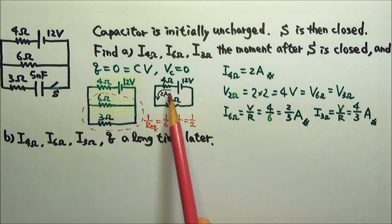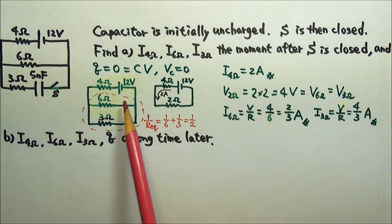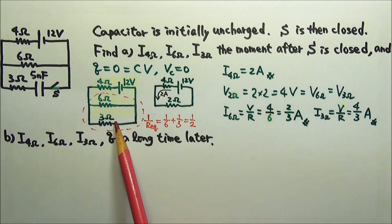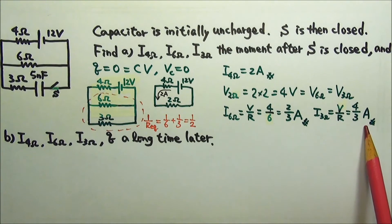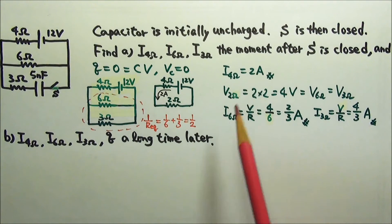And we can check our work since it's 2 amps of current coming through here and then split. Therefore, these two added together must equal 2 amps.